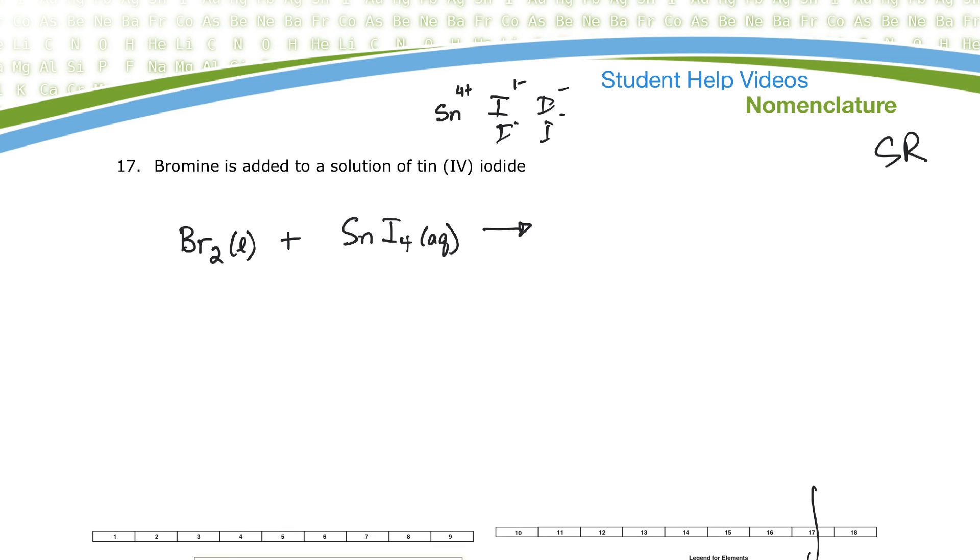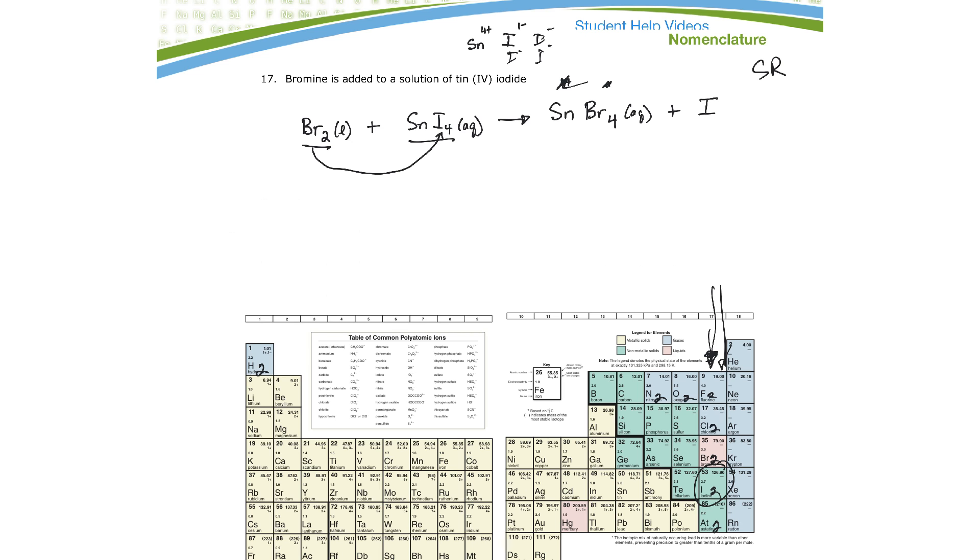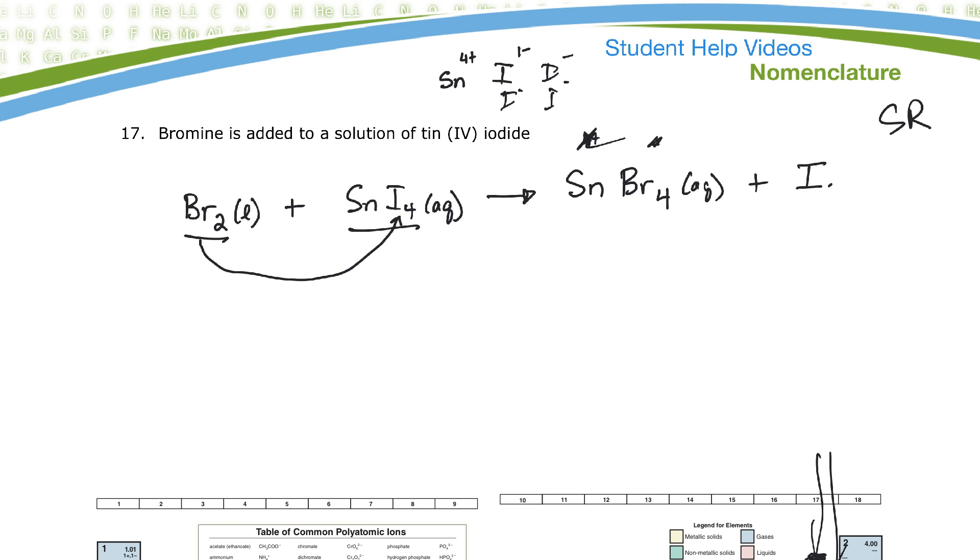So bromine reacts with tin-4 iodide to produce. It'll be a single replacement reaction because I have a compound and an element. So this bromine is going to come and kick the iodine out. So it's going to form tin, bromide. Now let's just see here. This is a 4+. Well, bromine is in that same column. So it'll be a SnBr4. Okay. And that'll probably be aqueous, too. I'm just guessing. I'll show you later how you can determine exactly what that is. Plus, and iodine gets kicked off by itself. Now, iodine is one of those diatomic elements. Right there. So remember, hydrogen is a 2. So is nitrogen, oxygen, fluorine, and then this whole column. So iodine is a 2. Whoops. Okay. So it'd be I2 there.